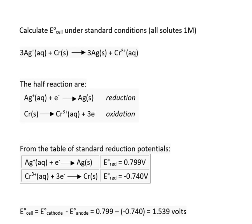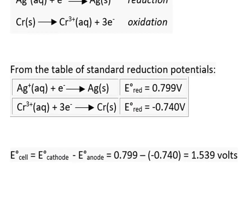We substitute the reduction potentials in the equation E°cell equals E°cathode minus E°anode. If you're thinking that the chromium half reaction needs to be reversed and so does the voltage, the subtraction sign in this equation takes that into account.